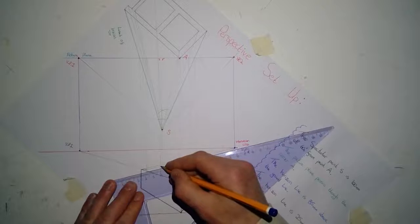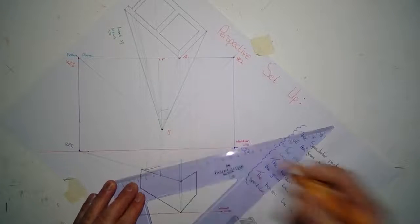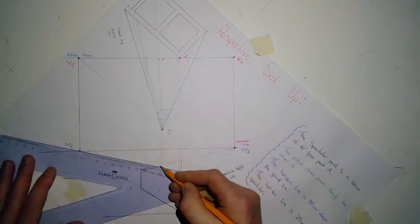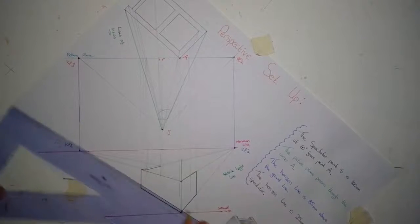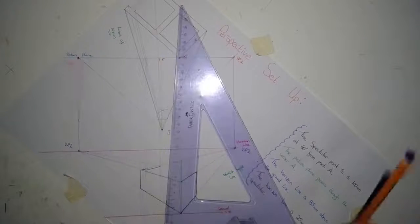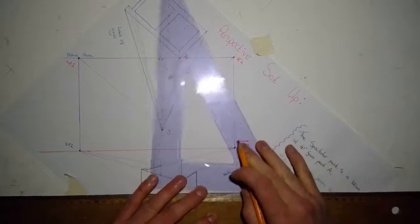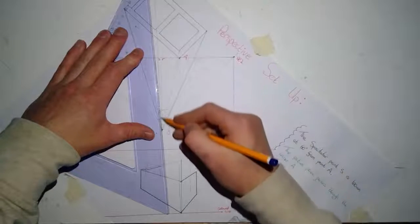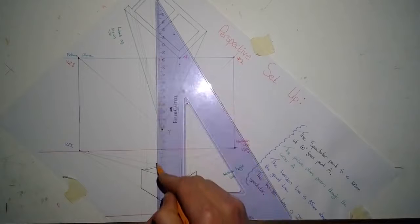I also find it easier to kind of go over the object with my darker pencil as I'm drawing, as I'm bringing down my points, because at times it can get a little confusing if you leave it all till the end. So I'll join my point to the spectator where it crosses the picture plane.